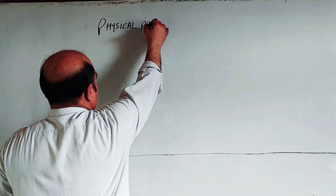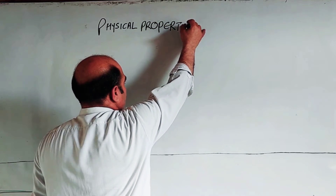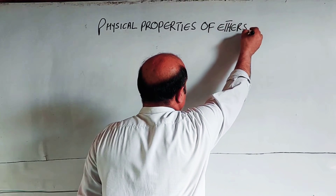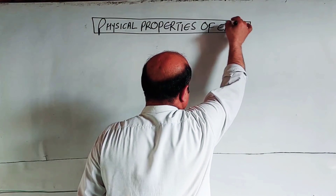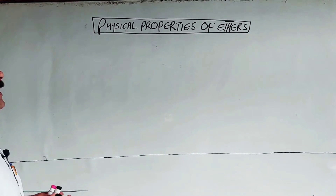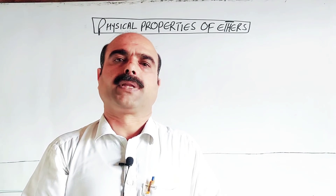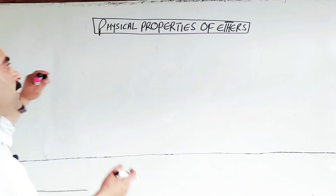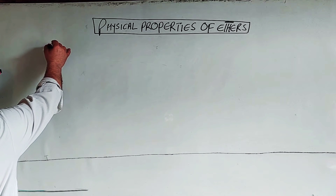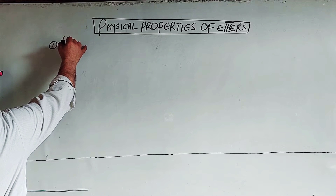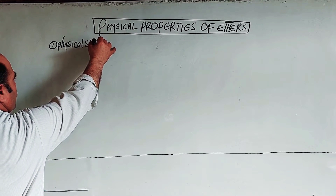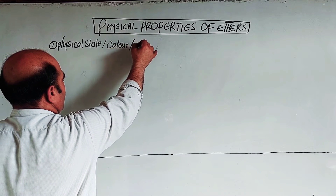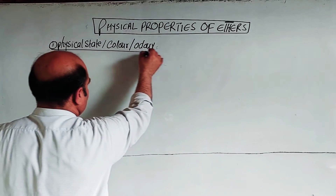Physical properties of ethers: ethers are a pure homologous series of organic compounds. The physical properties we will cover include color, odor, taste, conductivity, solubility, refractive index, melting point, boiling point, and more. First, we discuss physical state, color, and odor.